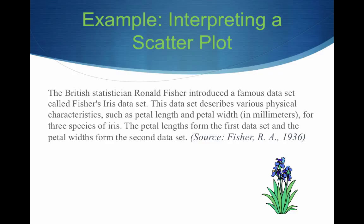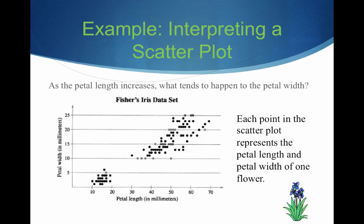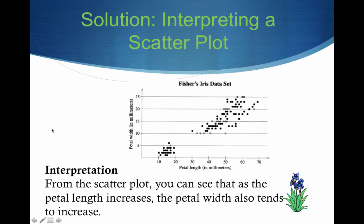All right? Well, let's look at an example. We've got the British statistician Ronald Fisher introduced a famous data set called Fisher's Iris Data Set. This is actually true. This data set describes various physical characteristics, such as petal length and petal width in millimeters, for three species of iris. The petal lengths form the first data set, and the petal widths form the second data set. Well, as the petal length increases, what tends to happen to the petal width? And this should just be common sense, wouldn't you think? As the petal length increases, wouldn't you think the petal width increases? Sure it does. And that's exactly what we see from this scatter plot. And so, again, we've got the length and the width plotted as a single point, and we can see by this increase, this linear increase in our points, that, yeah, there is what we're going to learn is a correlation. And what is it? It's that as petal length increases, so as petal length increases, what do we see? Well, we see that the petal width increases as well.